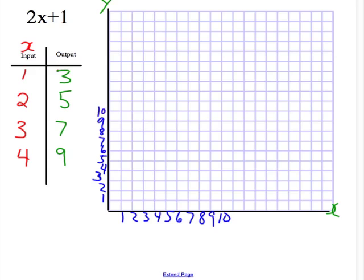So this tells me when my x value is 1, that my y value has to be 3. So at x is 1, I could be anywhere on this line. So that's why it's important to have my y value, because it tells me on this line, I need to stop at 3, and I can put a dot there.